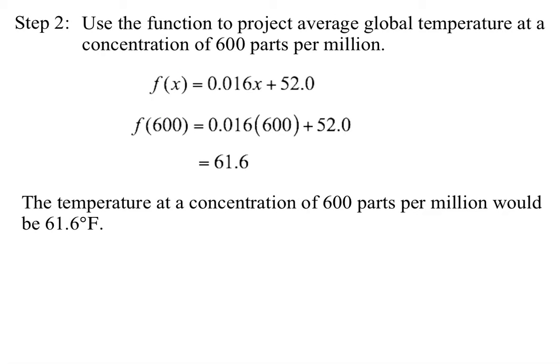All right, step two, use the function to make a prediction. So it says we have 600 parts per million given, and we want to find out what would be our global temperature. So you're going to substitute 600 in for x. So you substitute it in, and you simplify it, and you get 61.6. So it's saying then that the temperature at a concentration of 600 parts per million would be 61.6 degrees Fahrenheit. So you're making predictions from that model if you assume that it continues to increase at that rate of change.